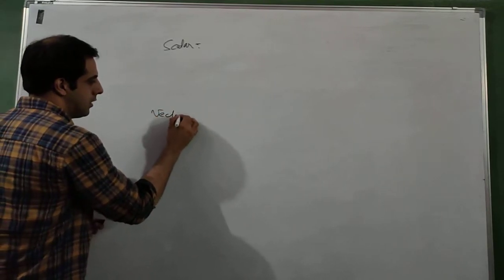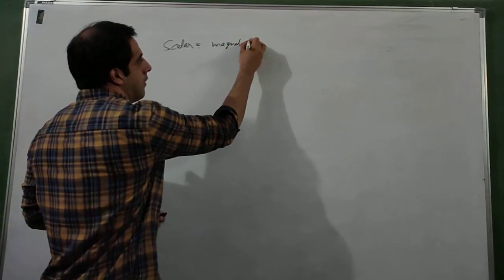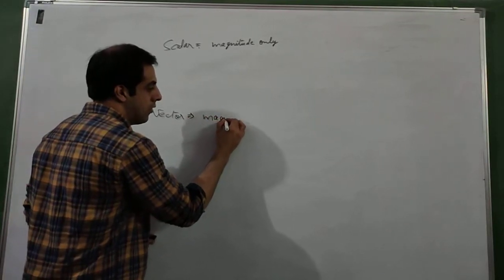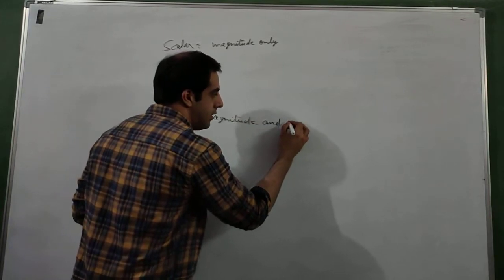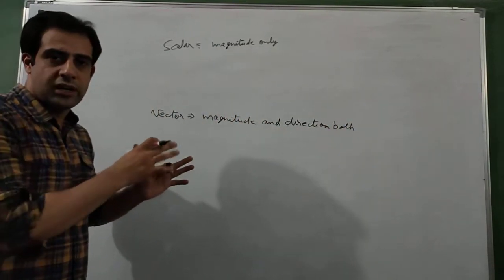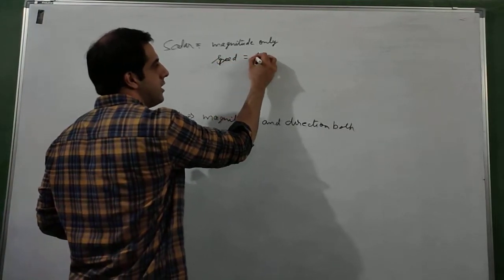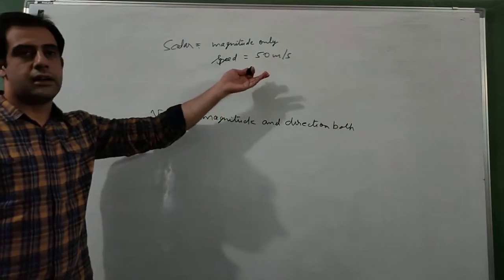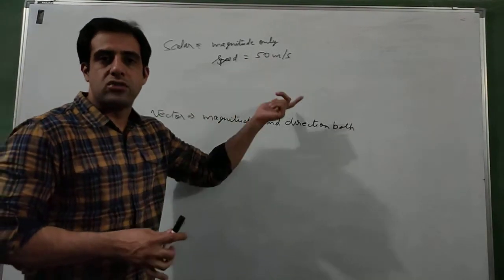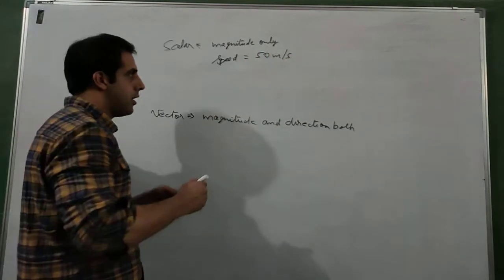There are two types of physical quantities: scalar and vector. Scalar quantities are those defined by magnitude only, while vector quantities are defined by magnitude and direction both — we have to use them both at the same time. For example, speed is a scalar quantity. Speed equals 50 meters per second tells us only the magnitude; it does not tell us in which direction the body is going, so it is defined by magnitude only.